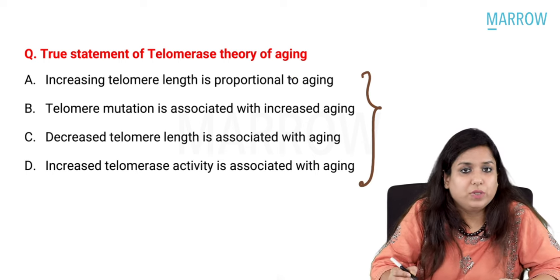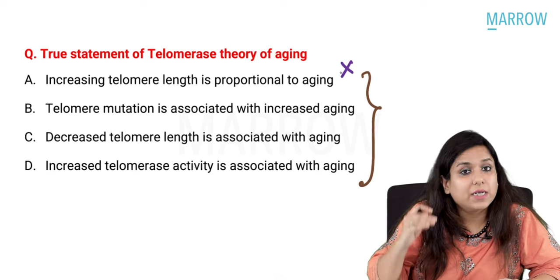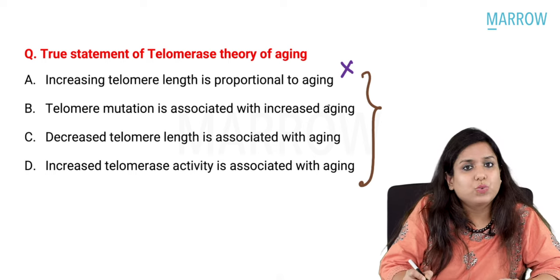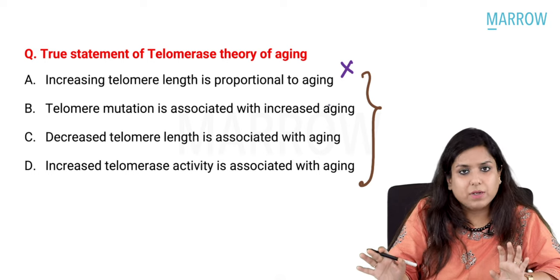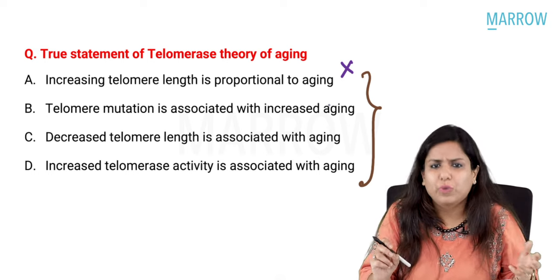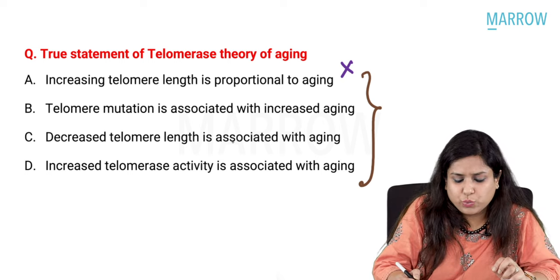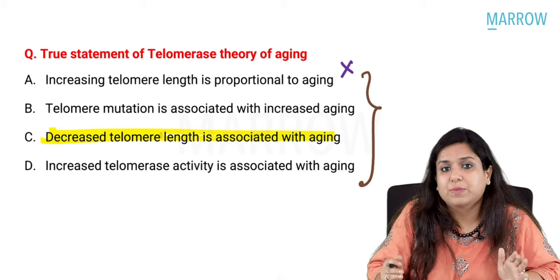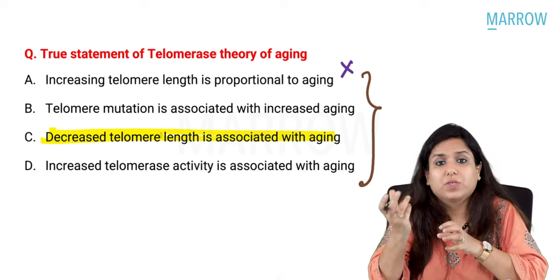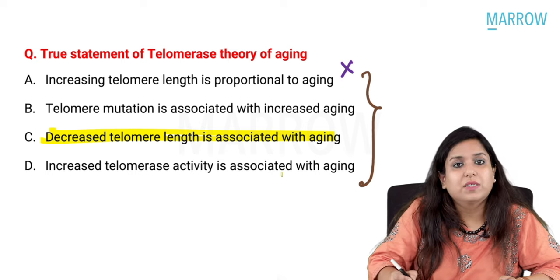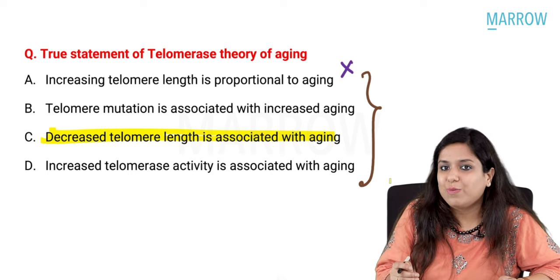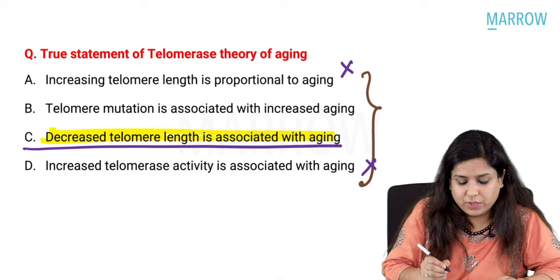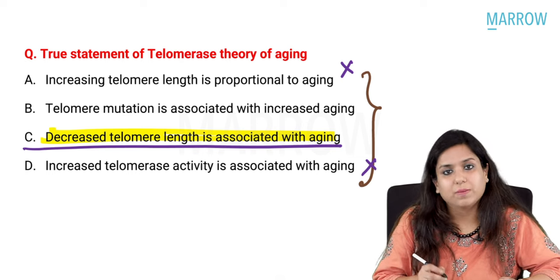Reviewing the options: increased telomere length is proportional to aging — no, it is decreased telomere length. Telomere mutation is associated with increased aging — controversial, leave it. Decreased telomere length is associated with aging — this is an absolutely correct statement. Increased telomerase activity is associated with aging — no, it is decreased telomerase activity that is associated with aging. Therefore the true statement is: decreased telomere length is associated with aging.